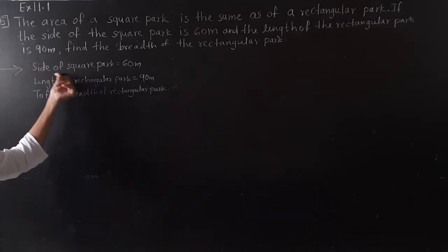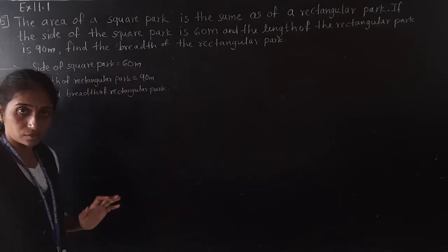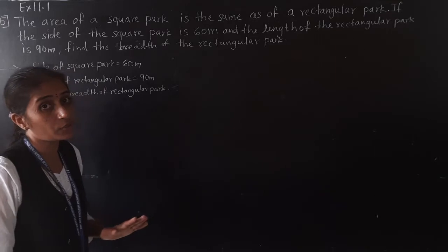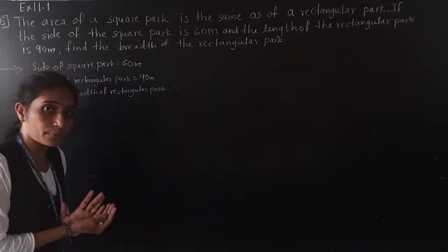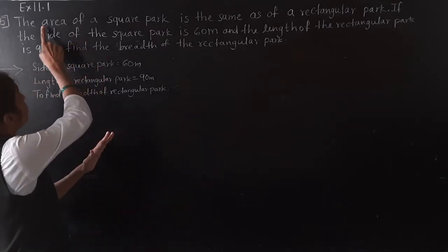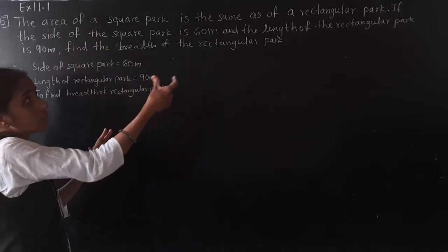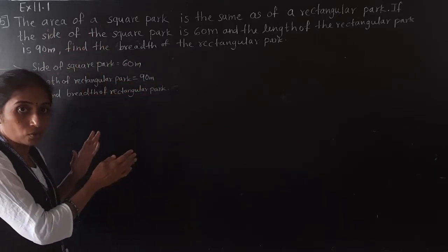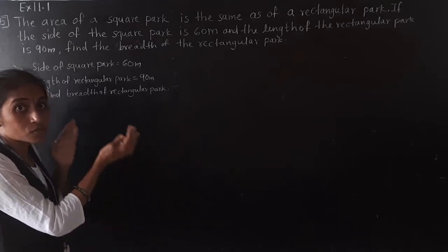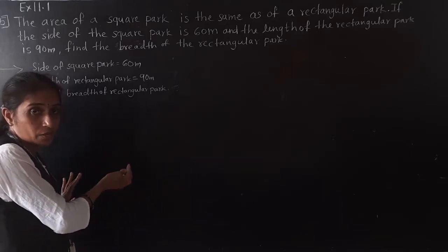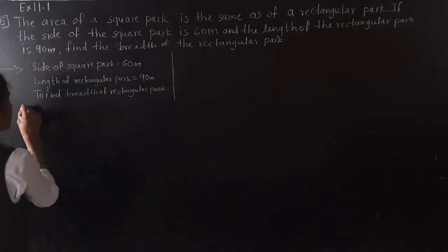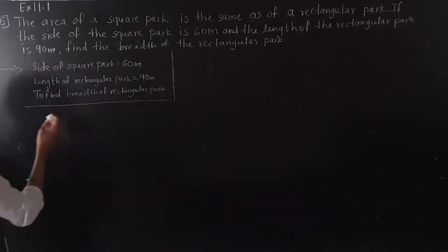Side of square park is given, so we can find the area of square park. And since area of square park is same as area of rectangular park, if we get the area of square park, we will get the area of rectangular park. Let's solve the example now.